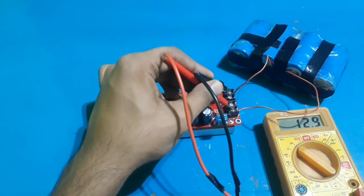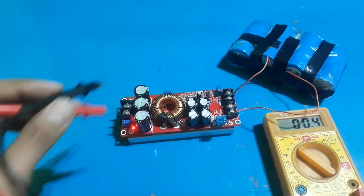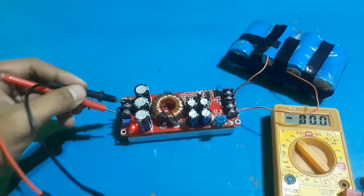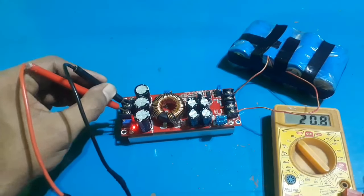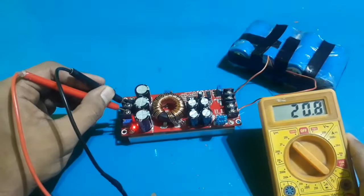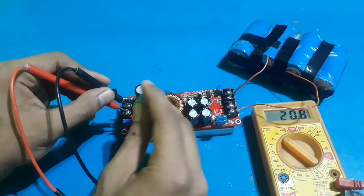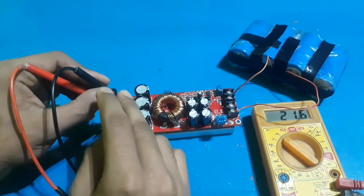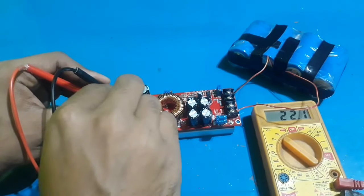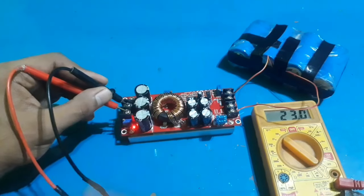The input voltage is 12.9 volts and the output adjusted voltage is around 20.8 volts. If you rotate the potentiometer clockwise, then the voltage will increase and it increases up to 80 volts.